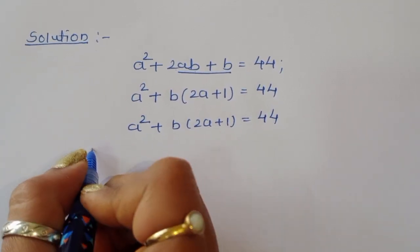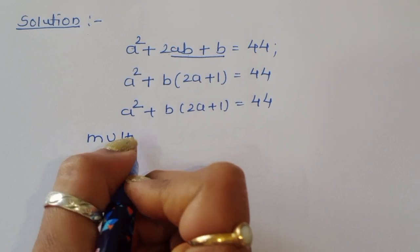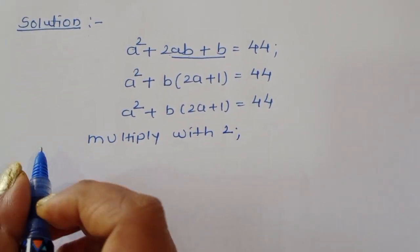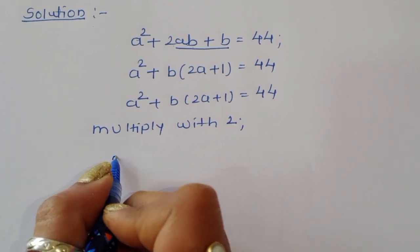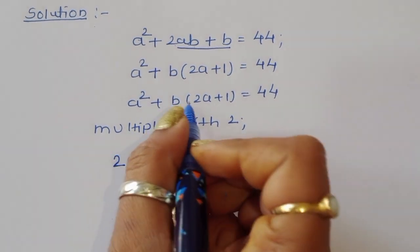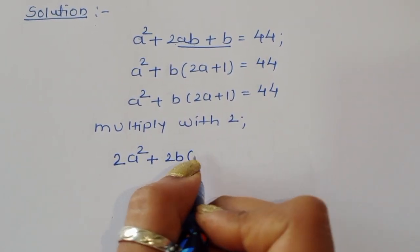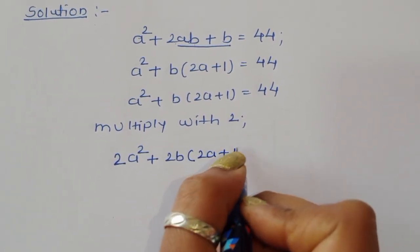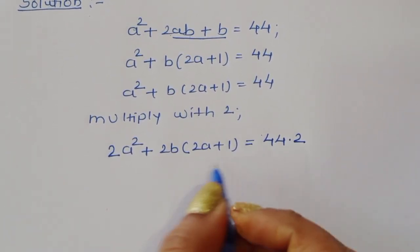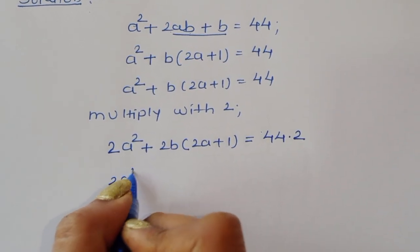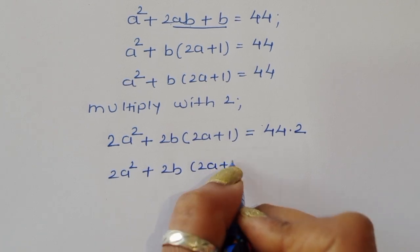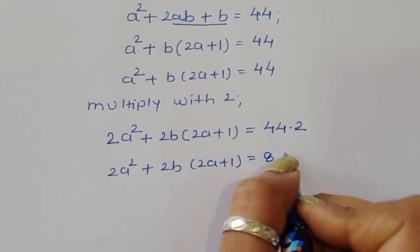Now we multiply both sides by 2, so we get 2a² + 2b(2a + 1) = 88.